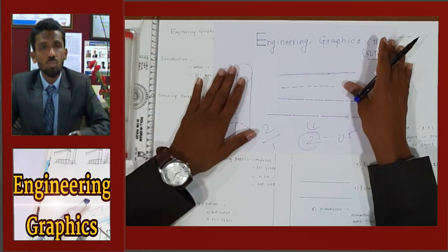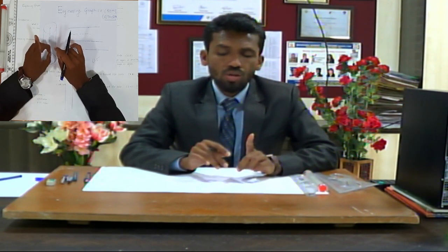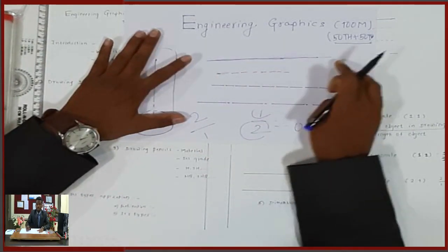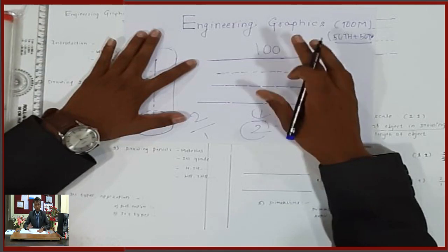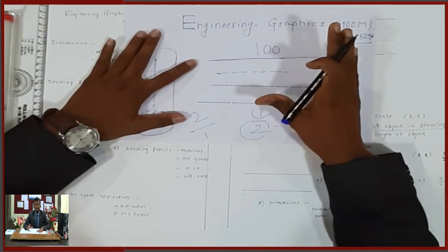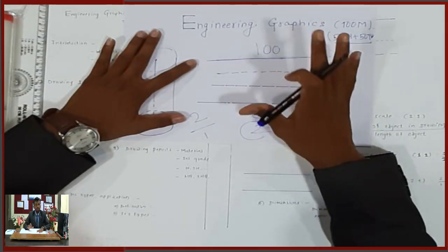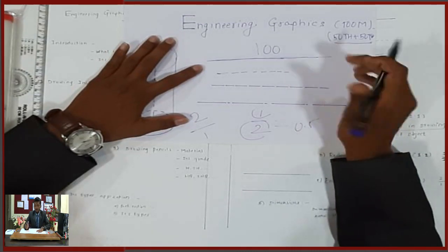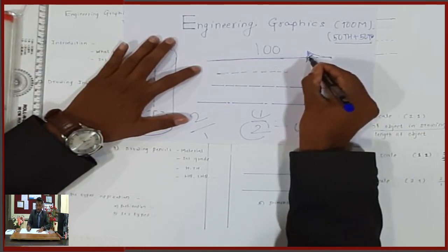Now, about dimensions: a dimension has parts. The first part is the dimension line. The second part is the extension line. And the dimension is indicated with arrowheads. For example, if a line is 100 mm, we put arrowheads on both sides. The arrowhead must be filled — it is a solid arrowhead at each end of the dimension line.